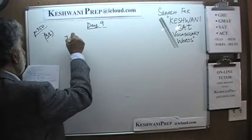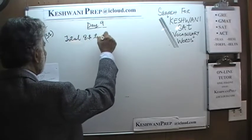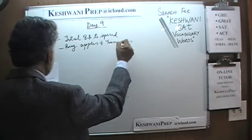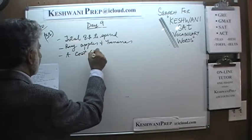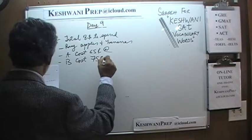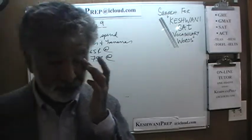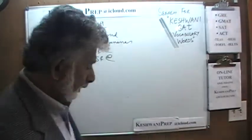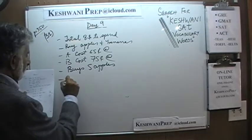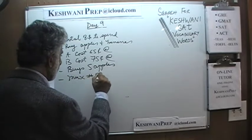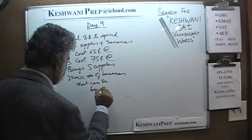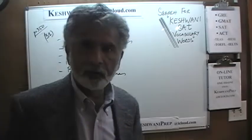Number 31. Here we are told that we have a total of 8 dollars to spend. We are going to buy apples and bananas. We are told that apples cost 65 cents each and bananas cost 75 cents each, and we have already bought 5 apples. The question is what is the maximum number of bananas that can be bought given that we only have 8 dollars to spend.